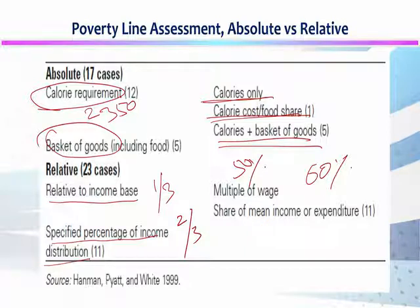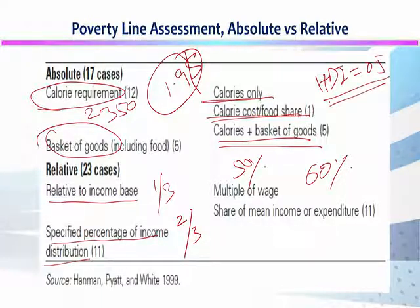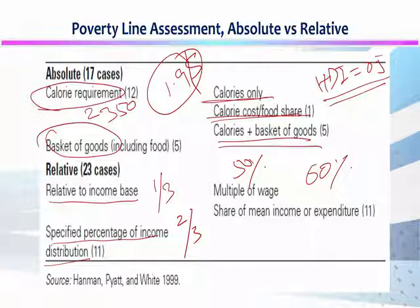Absolute poverty के लिए हम 1.9 dollar a day को भी use कर सकते हैं — if anyone is earning less than 1.9 dollar a day is considered as absolutely poor. इस तरह हम HDI का criteria use कर सकते हैं — if any country is achieving less than 0.5 HDI value is considered as poor. इसी line पر हम multi-dimensional poverty को use कर सकते हैं — अगर multi-dimensionally 50% population poor है तो country vulnerable position में आता है۔ اس طرح ان سب lines کو identify کرکے اس chart کو expand کر سکتے ہیں۔